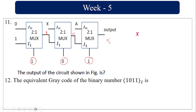The equivalent gray code of the binary number 01011: the first MSB is written as such. Then each next bit is the XOR (addition mod 2) of the previous and current bits: 0, 1+0=1, 0+1=1, 1+1=0. So the gray code value is 01110.